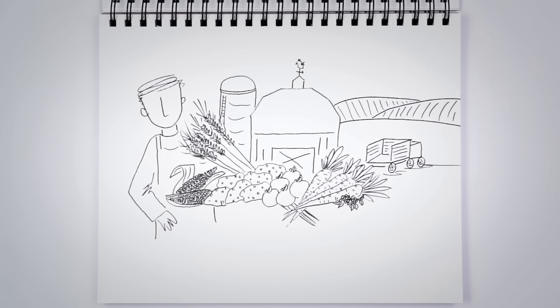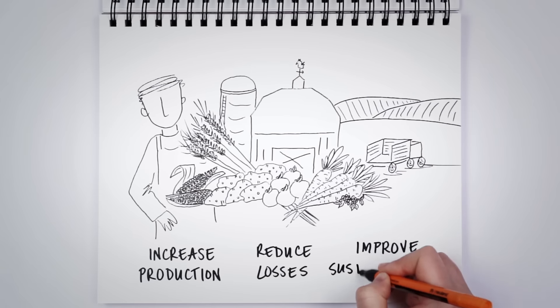Because we rely on agriculture for so many things, it's crucial to have cutting-edge technologies like genomics to help us increase production, reduce losses, and improve sustainability.